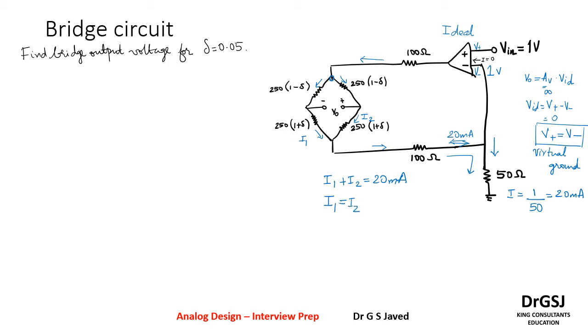In this case, i1 is equal to i2. So when i1 is equal to i2, it is one half of the 20 milliampere, so it is 10 milliampere is the current that is flowing. This is the total amount of current that is flowing.